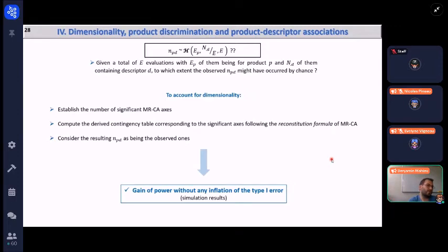And to account for the dimensionality in this analysis, it is proposed to compute the derived contingency table corresponding to the significant axes following the reconstitution formula of the MRCA, and then considering the resulting NPD as being the observed one. And following simulation results, this has been shown to provide a gain of power without any inflation of the type one error.